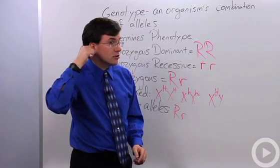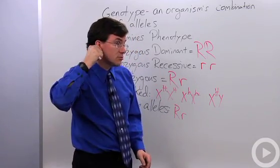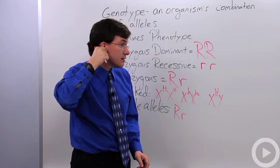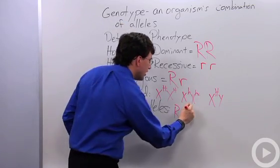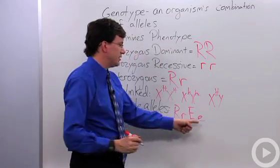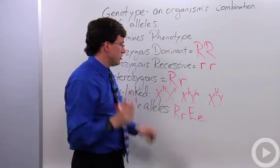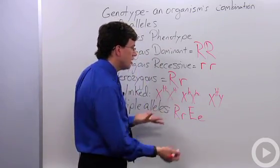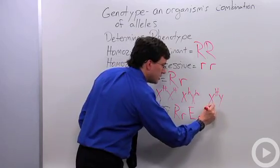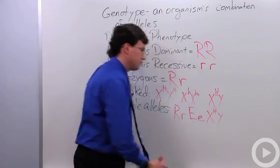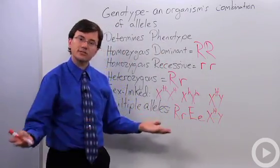I have free earlobes, which means that they are not stuck into my jawline like this—they're free. So I've got a big E, but let's suppose my dad gave me his attached earlobe gene. But I am not a hemophiliac. So this is how you write out somebody's genotype.